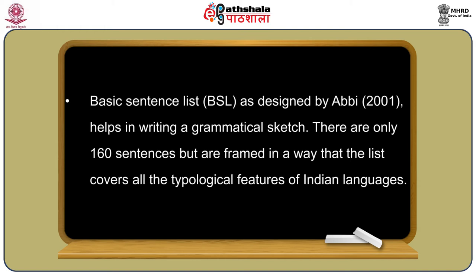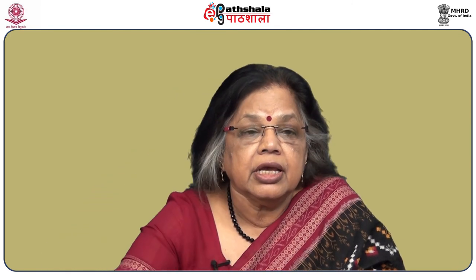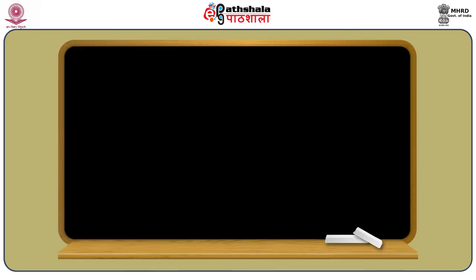The other list you will need for your preliminary study is the basic sentence list. Though there is nothing like universal basic sentences, the basic sentence list has been prepared by Appi 2001 and contains only 160 sentences — not very many. However, these sentences are so carefully selected that they refer to Indian typology, so that the constructions we talked about in India's linguistic area are not missed out. If you begin with these basic sentences, at the end you will get a brief grammatical sketch and also be able to identify the typology of the new language you are studying.